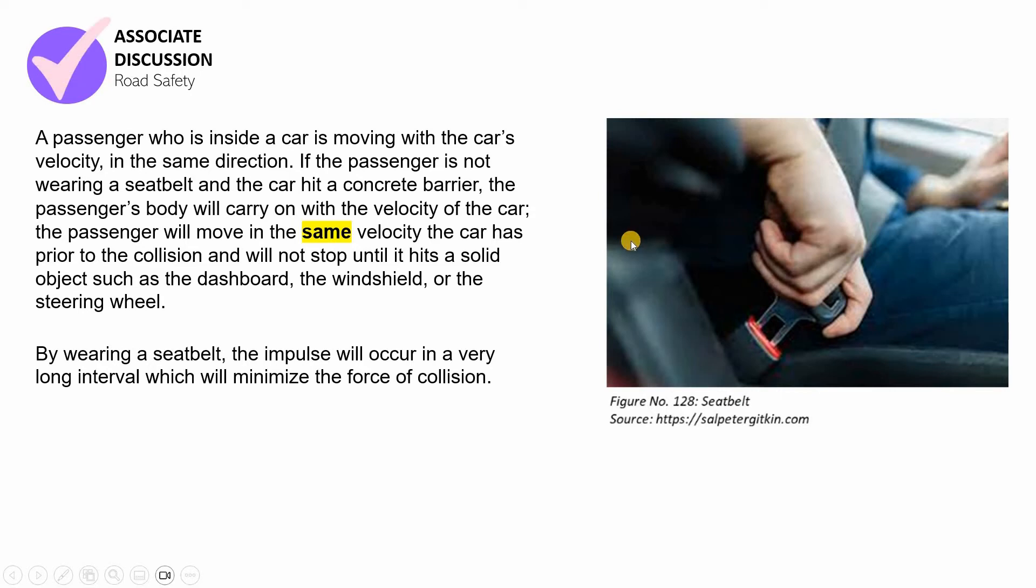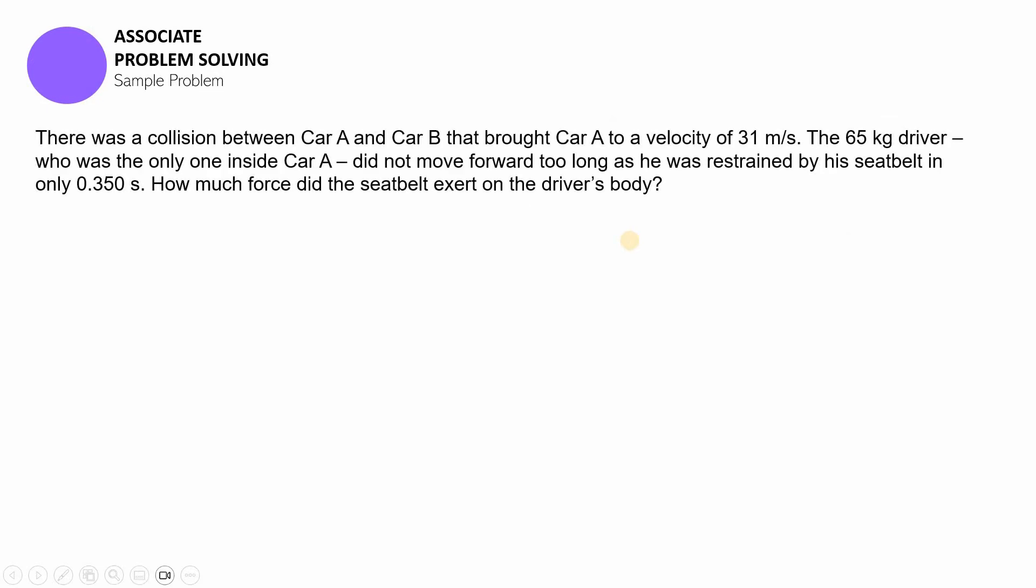Now let us apply what we understood in that discussion in this sample problem. So let us say that there was a collision between Car A and Car B that brought Car A to a velocity of 31 meters per second. Now, the 65-kilogram driver who was the only one inside Car A did not move forward too long as he was restrained by his seat belt in only 0.350 seconds. Now the question is, how much force did the seat belt apply on the driver's body to make this possible?